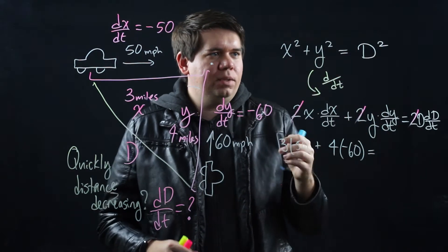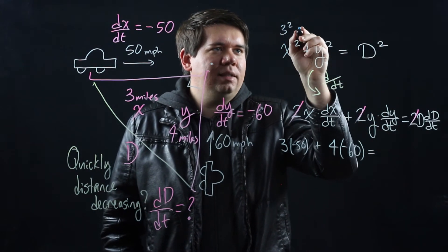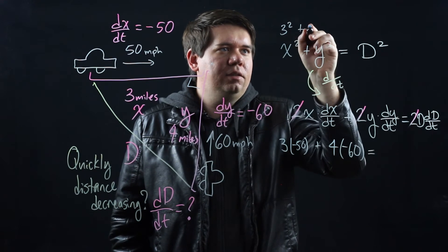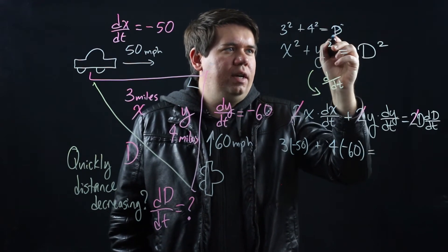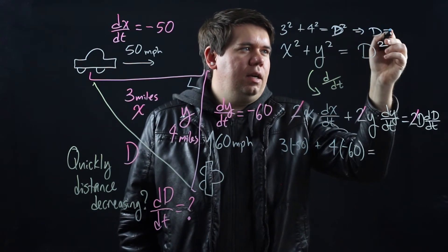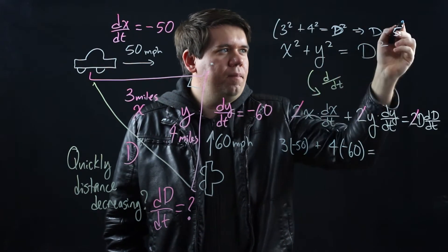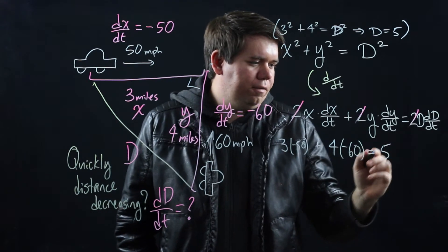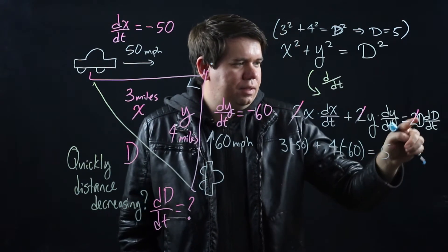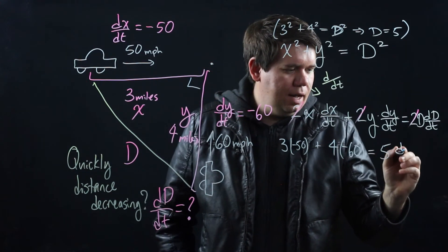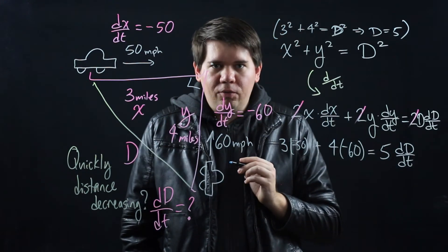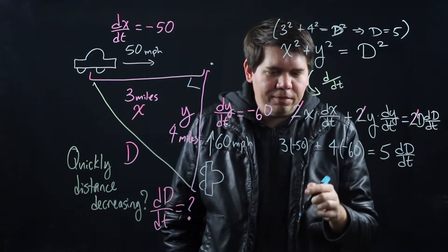I can use this relationship to say if at the moment when x is 3 and the moment when y is 4, at that moment you can solve d squared to say well d has to be equal to 5. Okay so we can plug in 5 and then we're left with the derivative of d with respect to time. That's the unknown. That's what we want to solve for. Well that's fine. Let's just solve it.